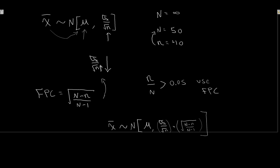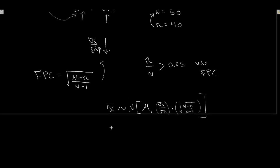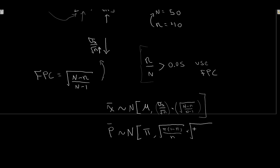This applies to p̄ as well. If conditions for normality are met, p̄ is centered around π with standard error √(π(1 − π) / n). If n/N is greater than 5%, we multiply that by the finite population correction factor √((N − n) / (N − 1)). In each case, all we're doing is adjusting our standard errors — making them smaller to account for the sample size approaching the population size.